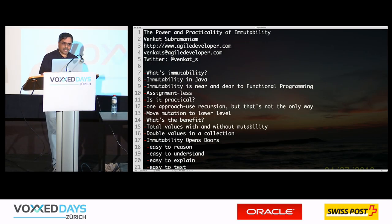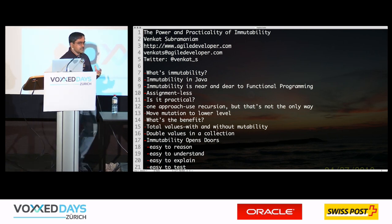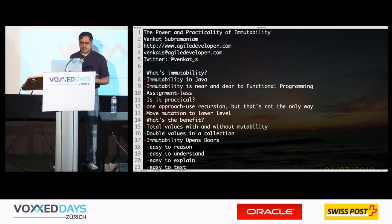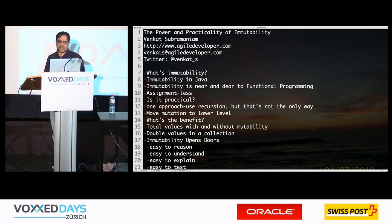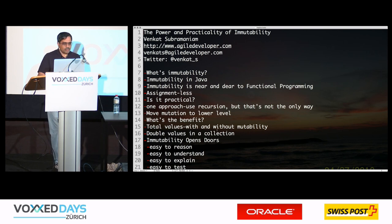Thanks for coming. We're going to talk about power and the practicality of immutability. I want to talk a little bit about what immutability is when it comes to programming in languages like Java, where we have predominantly focused on mutating state of objects all the years. How could we suddenly think about even making things immutable?